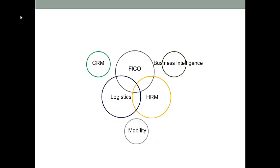Now we have a lot of new concepts in the business arena. For instance, we use social media to perform marketing campaigns, business intelligence to analyze historical data in order to predict future sales, and a lot of mobile technology in business operations. SAP has also considered these new trends. Therefore, new modules have been added to the SAP ERP system — for instance, the CRM module (customer relations management), the BI module (business intelligence), and the mobility module (mobile enterprise solution).